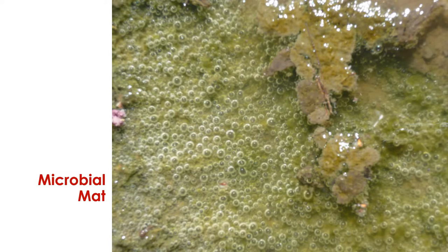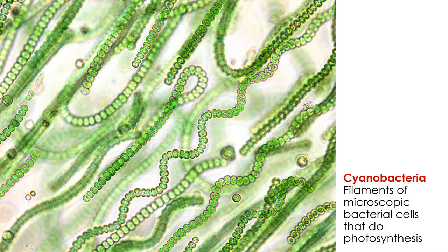These mats grow and develop on the surfaces of stromatolites and cause the mounds to form and develop over time. Although the stromatolites themselves are solid rock and sediment, the mats have the consistency of a gooey mucus. This mucus is due to the presence of an extracellular matrix secreted by the microorganisms. These microbial mats generally consist of cyanobacteria — filaments or chains of microscopic bacteria that do photosynthesis, converting sunlight, carbon dioxide, and water into oxygen and food.